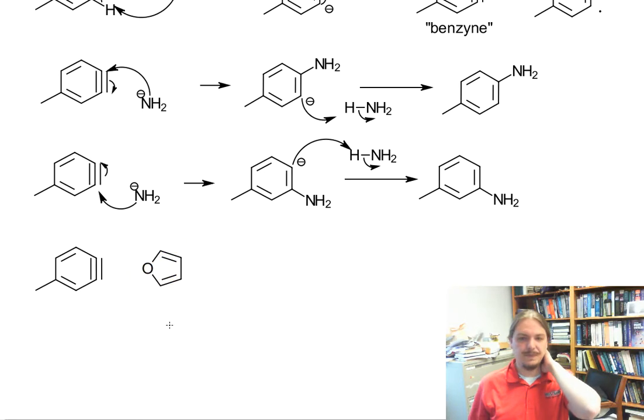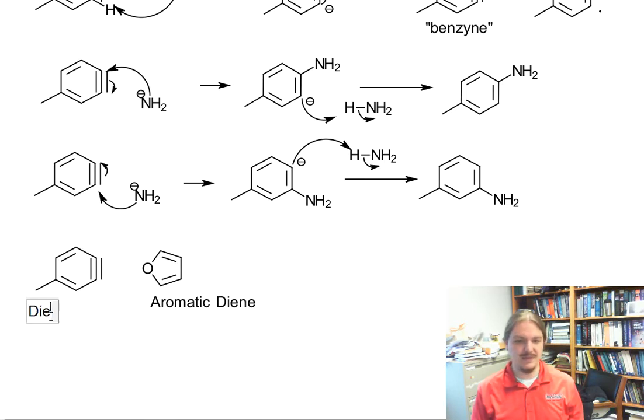And so what some chemists have done to verify the existence of benzyne is to generate benzyne in the presence of furan. And so furan looks like it's a diene, but it's also an aromatic diene. So you might expect that as a diene, furan is not the best diene, because it's aromatic. If it was to do something else, it would not be aromatic anymore. But benzyne might be a pretty good dienophile.